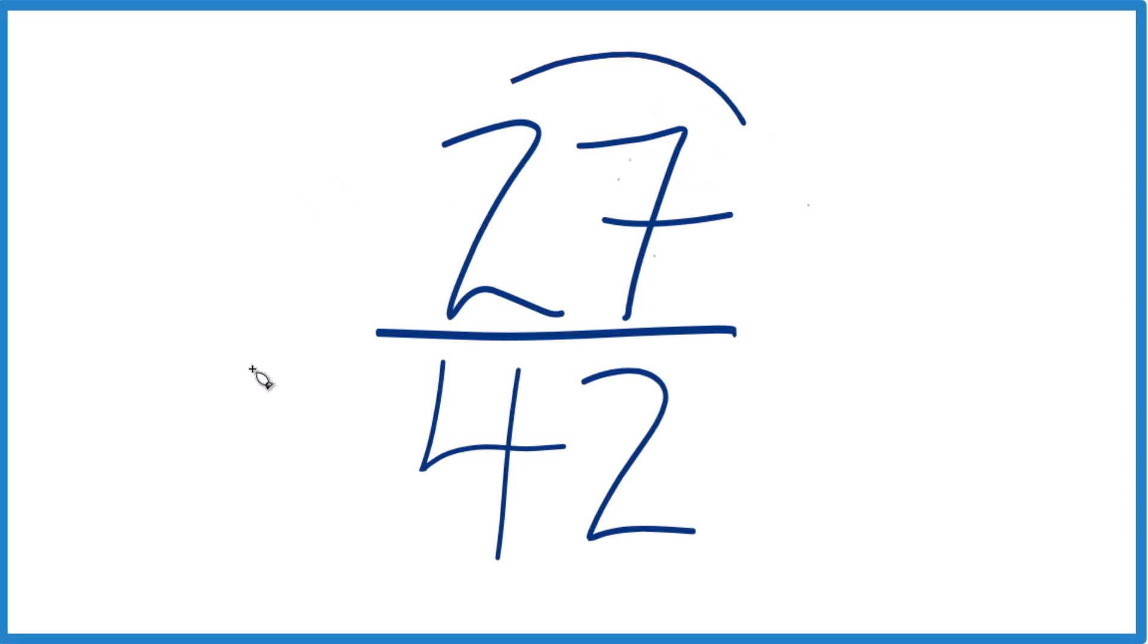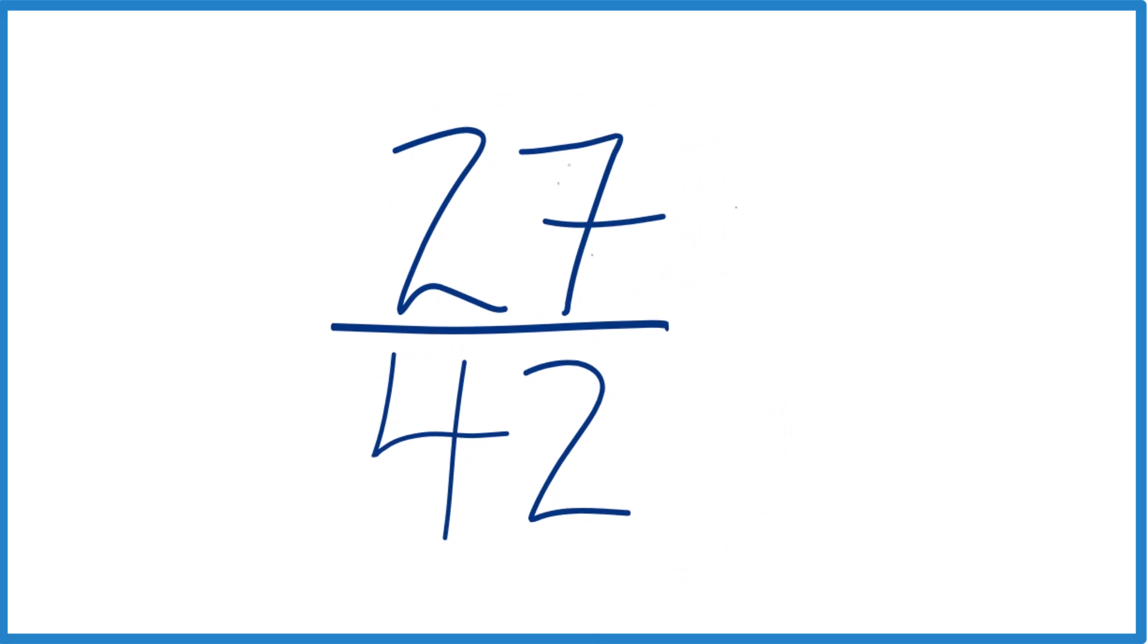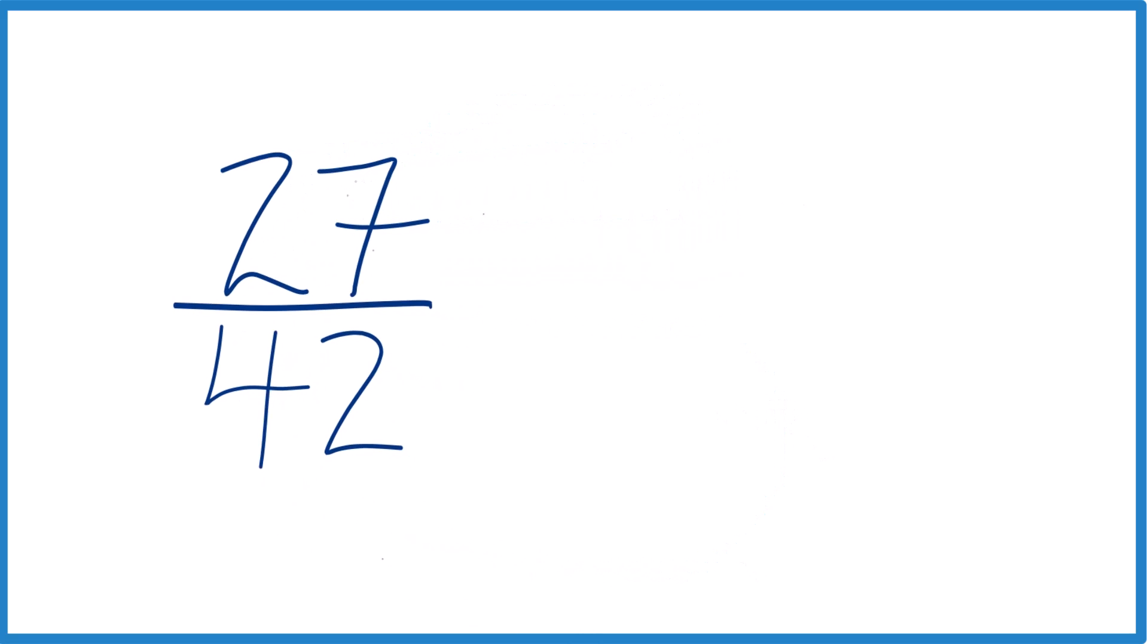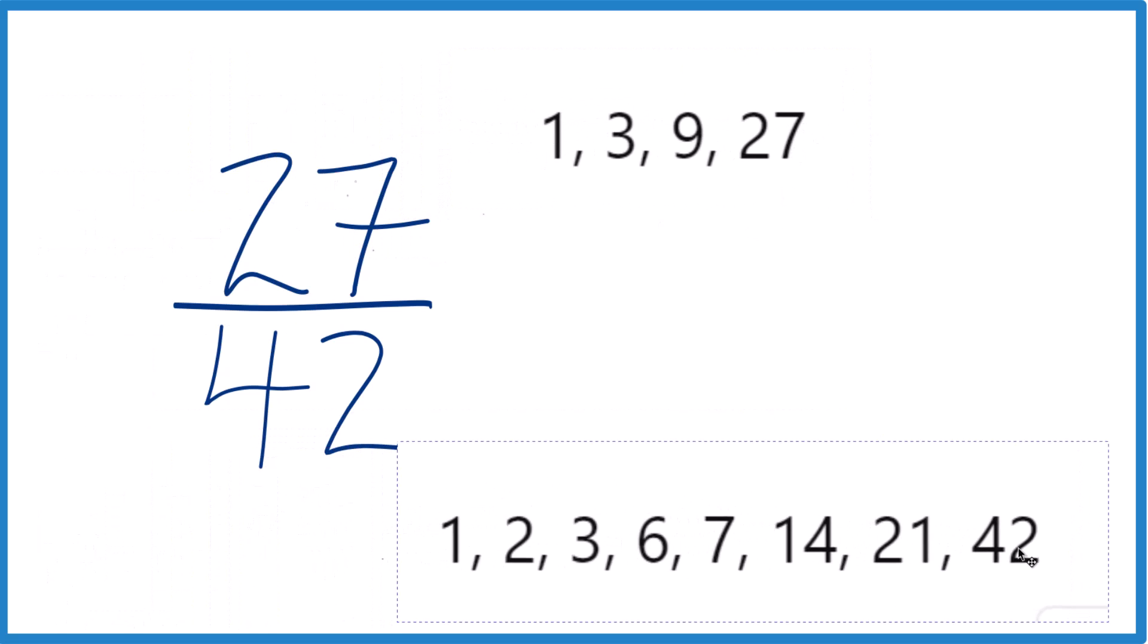Let's simplify the fraction 27/42. Here's how you do it. We need to find a common factor—that's a whole number that goes evenly into both 27 and 42. If we list the factors for 27, these are the factors for 27, and right here the factors for 42.